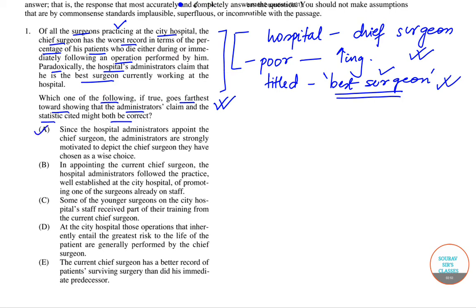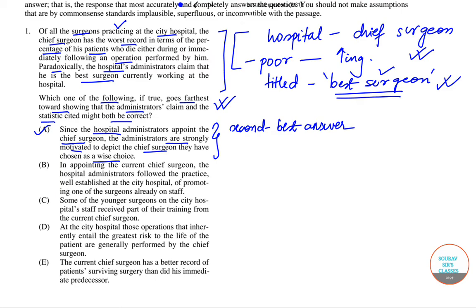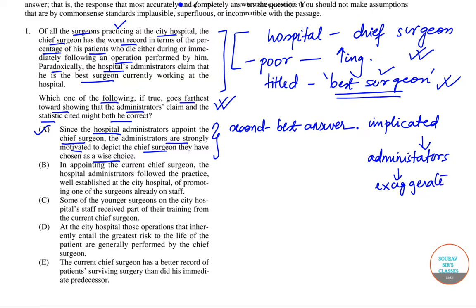We will first look at option A. Option A says: since hospital administrators appoint the chief surgeon, the administrators are strongly motivated to depict the chief surgeon they have chosen as a wise choice. In this option, the implication of the stated conflict of interest is that administrators may or might exaggerate the abilities of the chief surgeon. It may happen — it may be the case. However, this is a maybe case, so it's just a speculation.